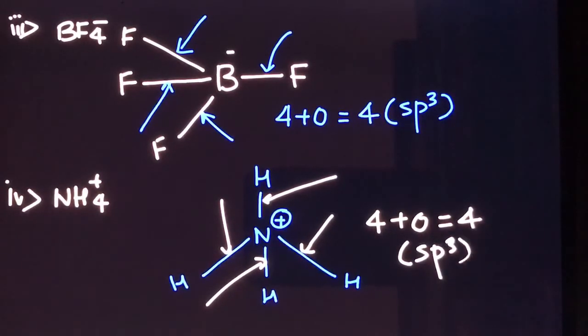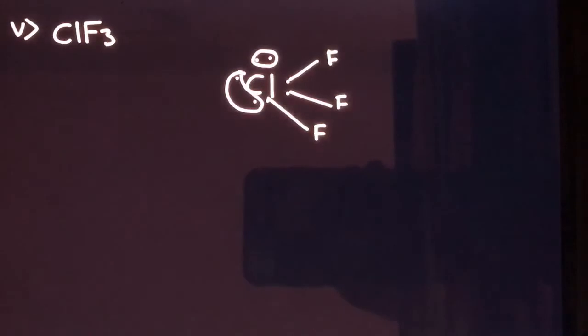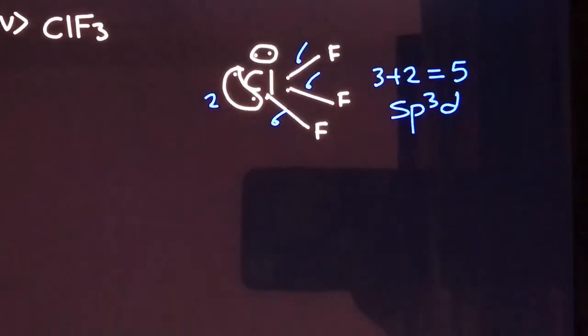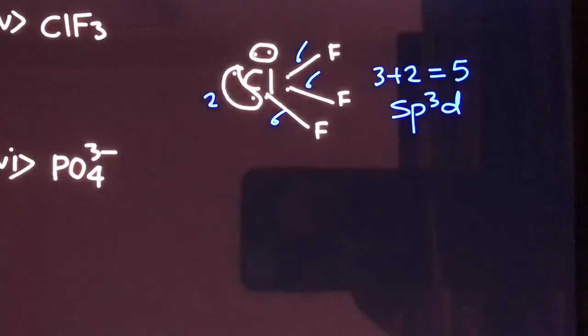Now let's solve for ClF₃. Chlorine has seven outermost electrons, so it will form three sigma bonds and there will be two lone pairs. The total number of sigma bonds is three, plus two lone pairs — so the steric number is five and the hybridization will be sp3d.